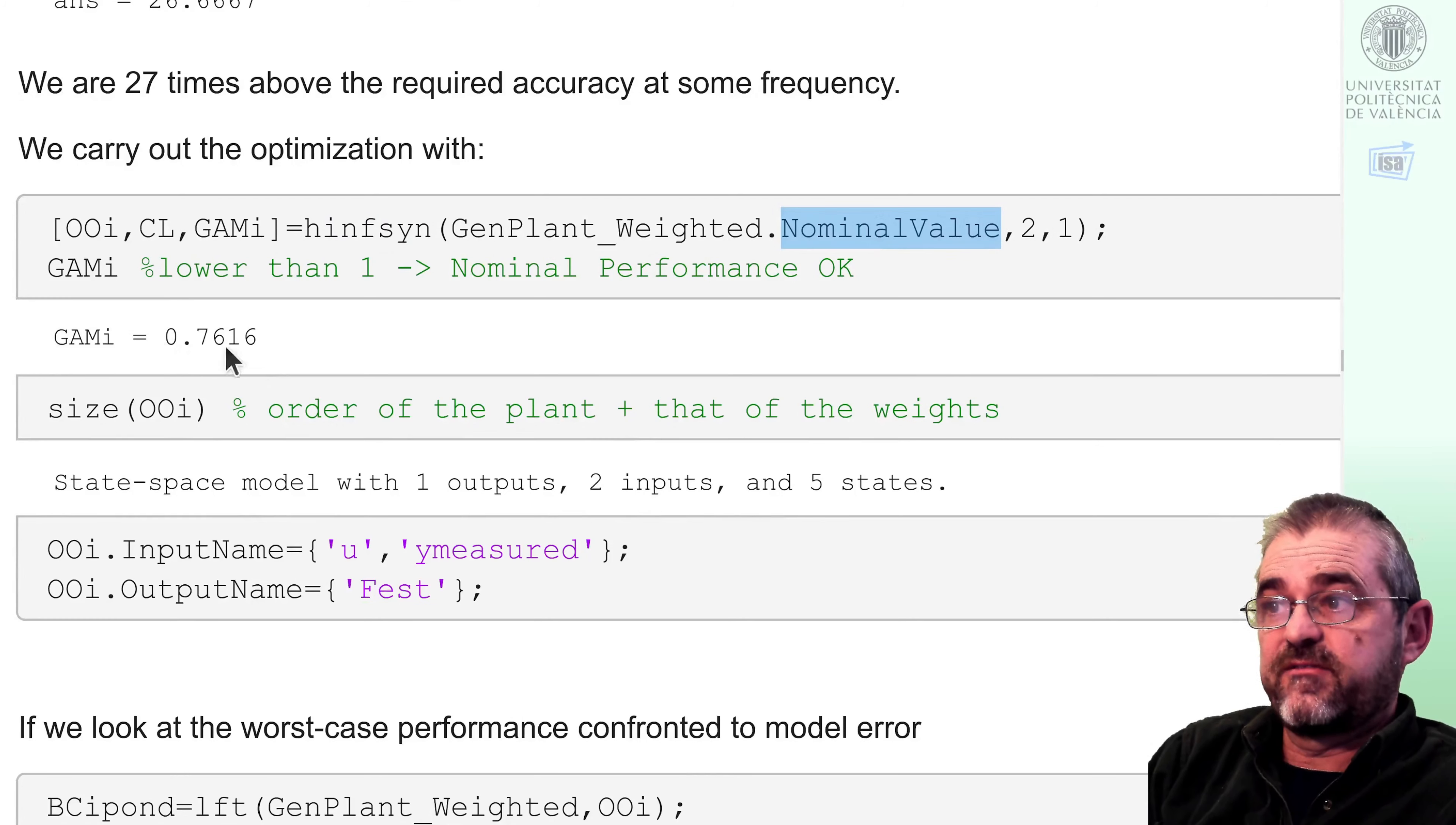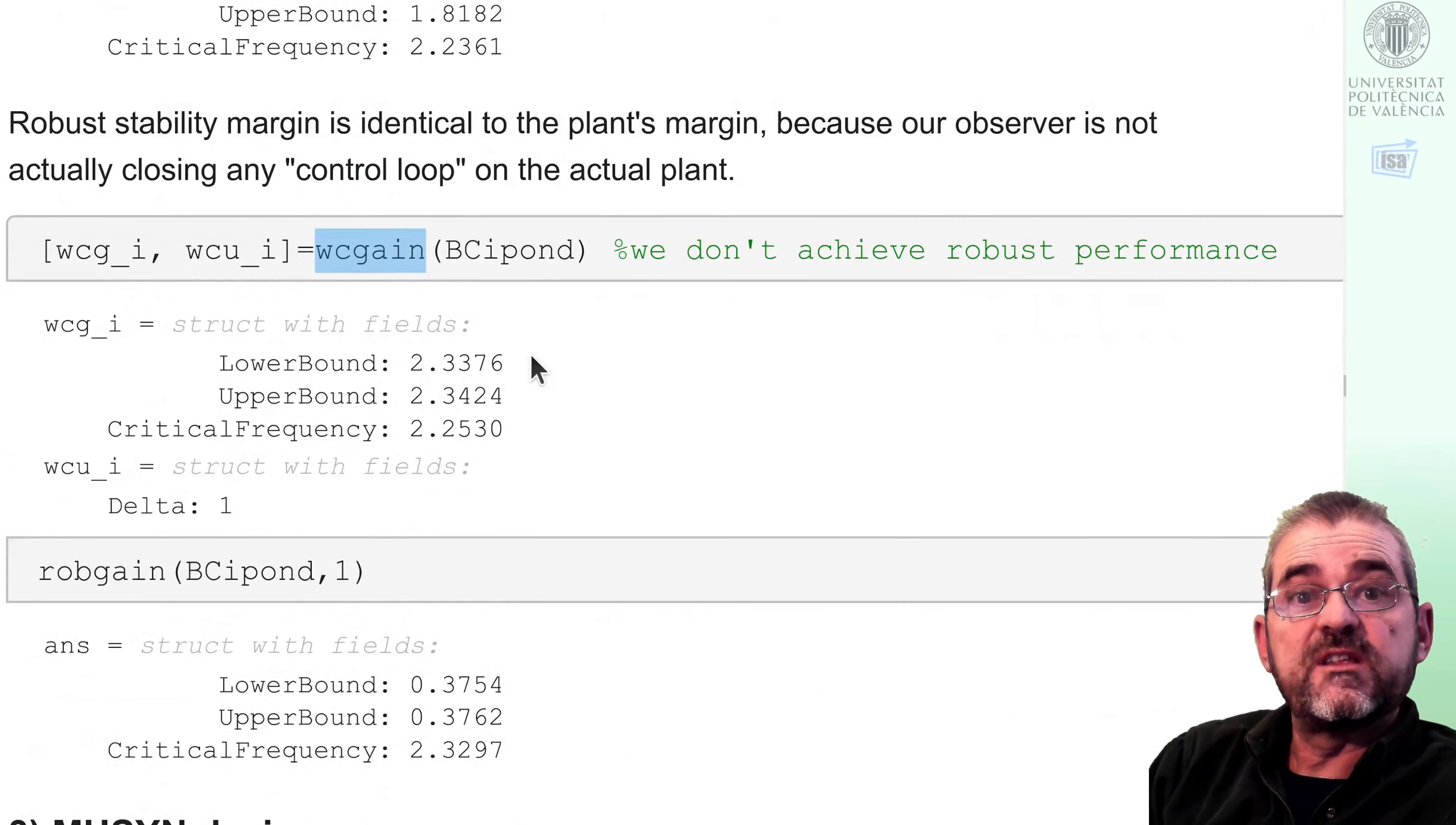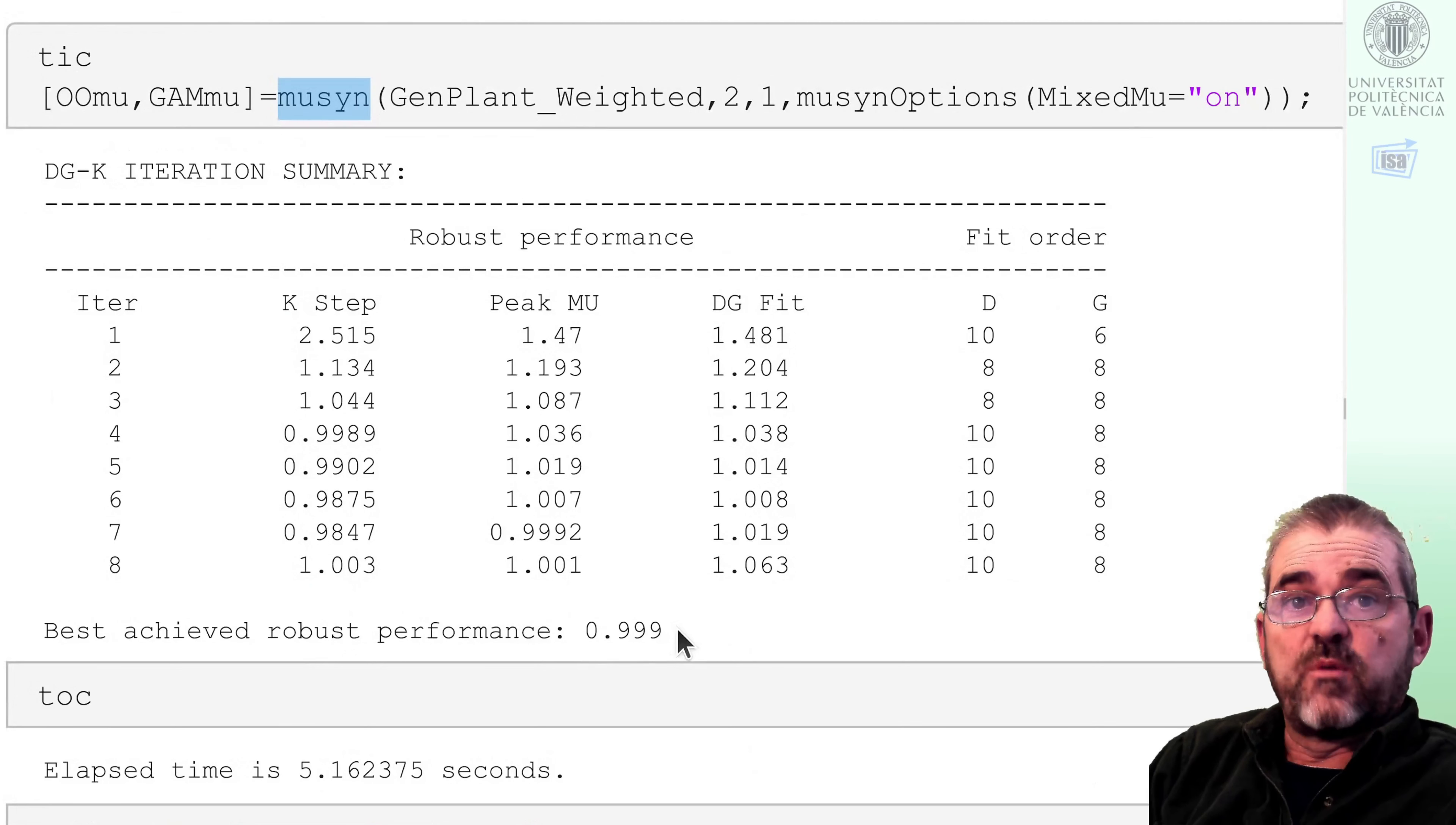So we built a generalized plant and H infinity synthesis with the nominal plant gave nominal performance gamma lower than one, but we did not have robust performance because the worst-case gain was 2.33. So for some value of the uncertainty and some frequency the error was above the required limits given by the output weights.